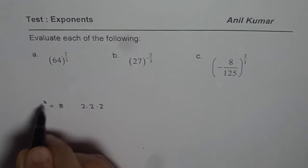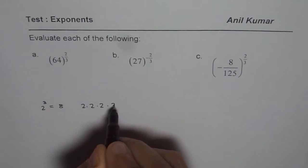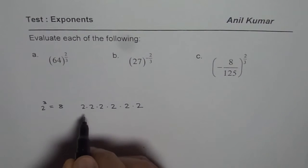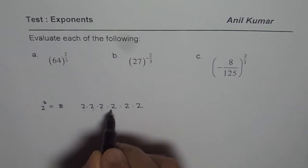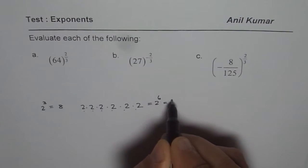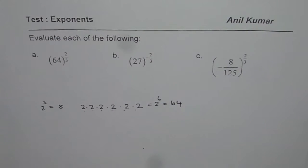That is 2 to the power of 3. 8 times 2 is 16, 16 times 2 is 32, times 2 is 64. So it is 1, 2, 3, 4, 5, 6. So 2 to the power of 6 is 64. This is one way of writing 64.